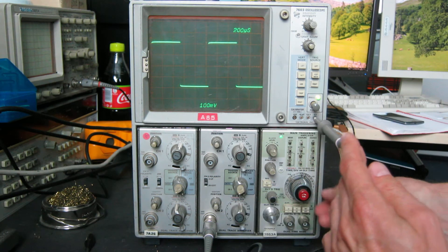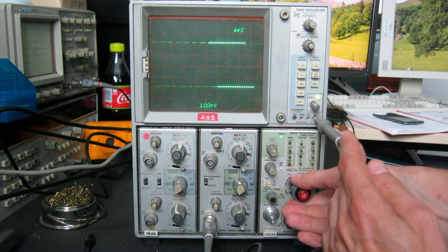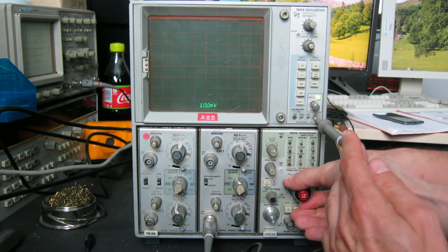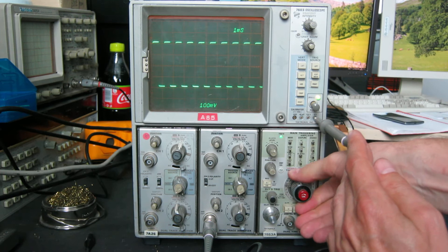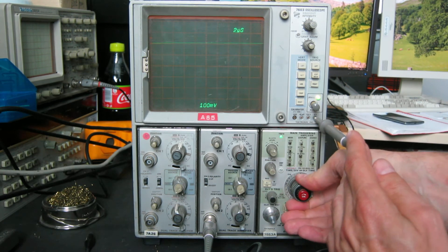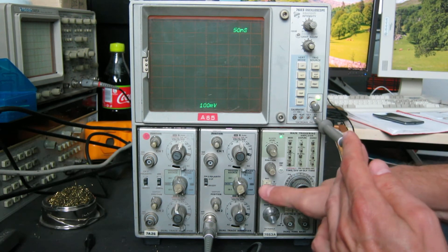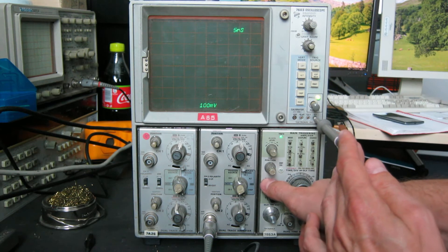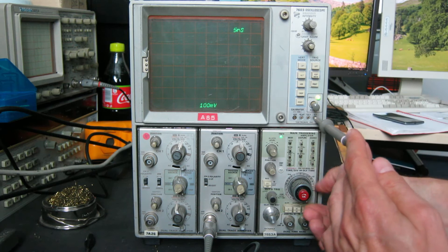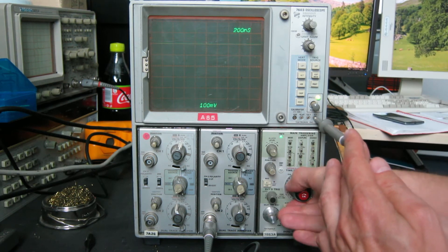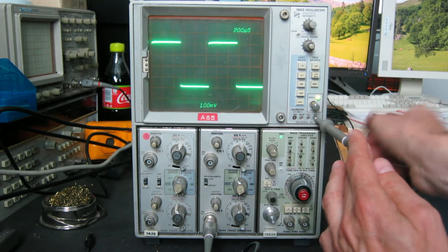But that's working as it should do, and we can change the time base. So it goes all the way from 5 seconds per division all the way through to 50 nanoseconds, and there's the expansion function, so we can get 5 nanoseconds per division, which is very dim because it's scanning very fast. And we'll return that to normal so we can see everything.